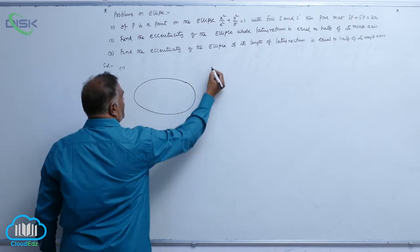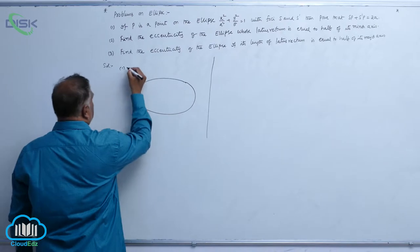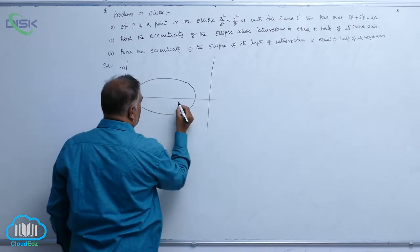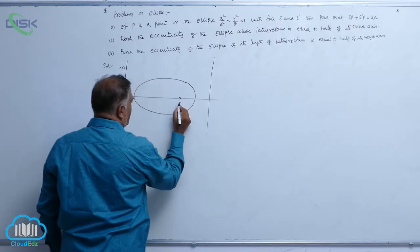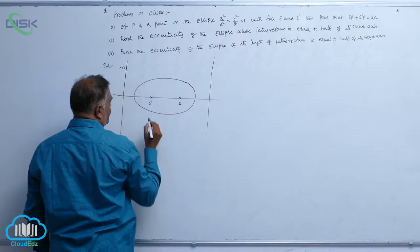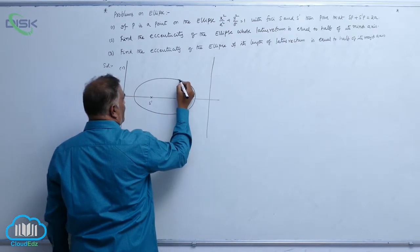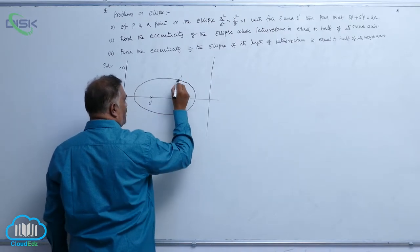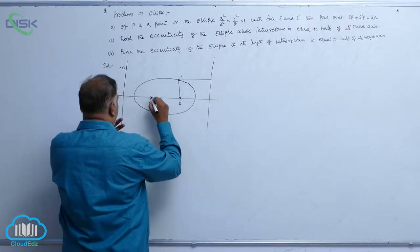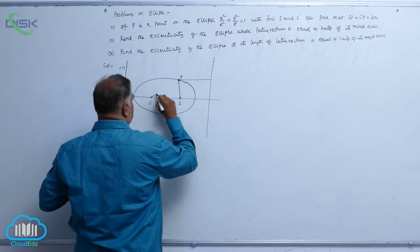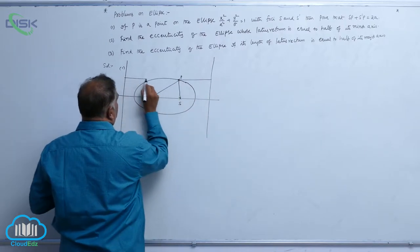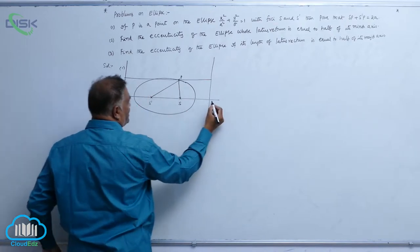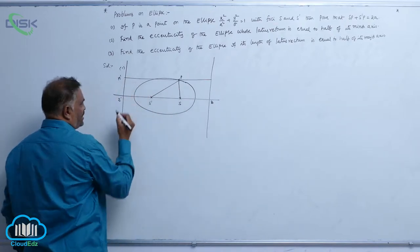Here is the ellipse with its directrices. Points S and S' are the foci. Let us consider point P on the ellipse. We have SP and PM, and S'P and PM', corresponding to the two directrices Z and Z'.